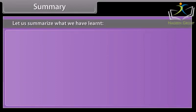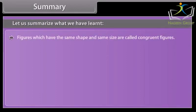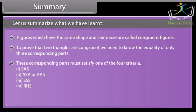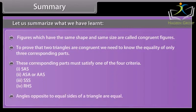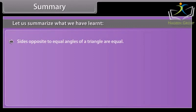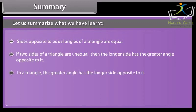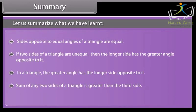Let us summarise what we have learnt. Figures which have the same shape and same size are called congruent figures. To prove that two triangles are congruent, we need to know the equality of only three corresponding parts satisfying one of four criteria: 1. SAS, 2. ASA or AAS, 3. SSS, 4. RHS. Angles opposite to equal sides of a triangle are equal. Sides opposite to equal angles of a triangle are equal. If two sides of a triangle are unequal, then the longer side has the greater angle opposite to it. In a triangle, the greater angle has the longer side opposite to it. The sum of any two sides of a triangle is greater than the third side.